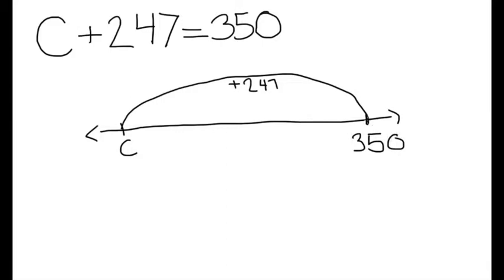Why 350? Look back at the equation. It says some number C increased by 247 is 350. You are now 247 units away from your variable C and on the number 350.